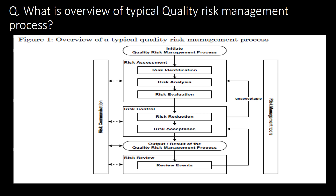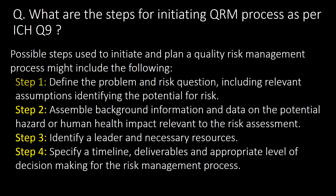What is an overview of the typical quality risk management process? The typical QRM process as per ICH Q9 can be divided broadly into four parts: first, initiate the quality risk management process; second, risk assessment, which includes risk identification, risk analysis, and risk evaluation; third, risk control, which includes risk reduction and risk acceptance; fourth, risk review, where we review events. Risk communication shall be performed intermediately as applicable, and risk management tools shall be used as and when required.